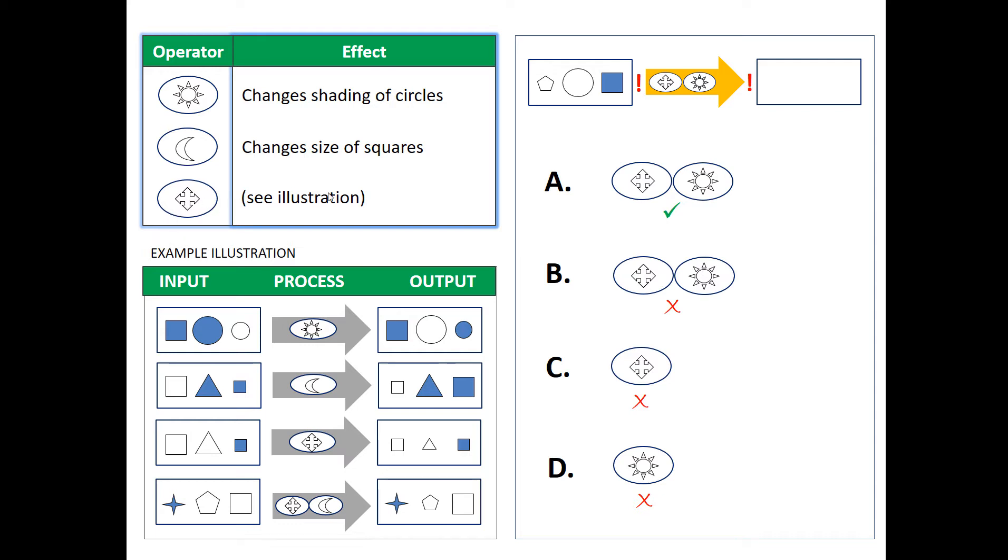This quad arrow shape, as shown in this illustration, changes the sizes of unshaded shapes. For example, notice here that the quad arrow made both the square and the triangle smaller.